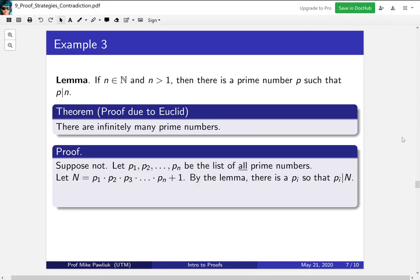The lemma tells us that there has to be a prime that divides this number. So since all of our primes are listed, it has to be one of the pᵢ that divides it. But something is suspect. If you try to divide N by pᵢ, any of the primes on the list, you'll have a remainder of one.